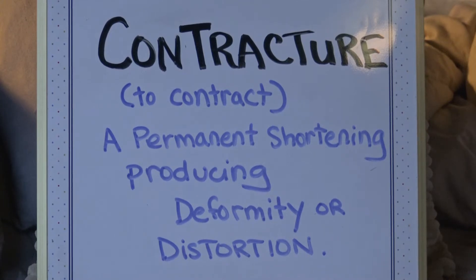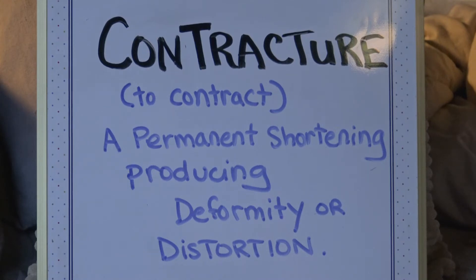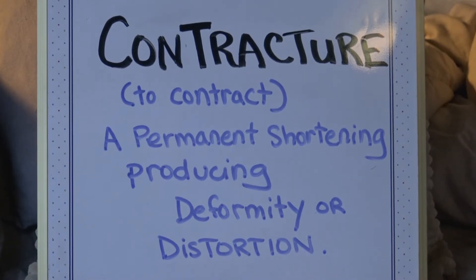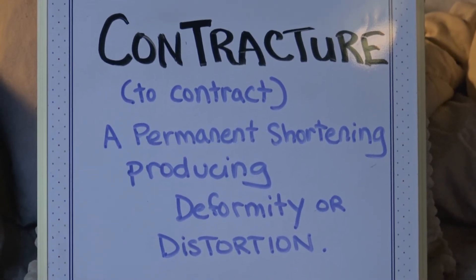Contracture — contracture is a permanent shortening, producing deformity or distortion. So contracting — it is going in, shrinking, shortening. Like scar tissue, muscle, tendon shortening. It's a permanent distortion.